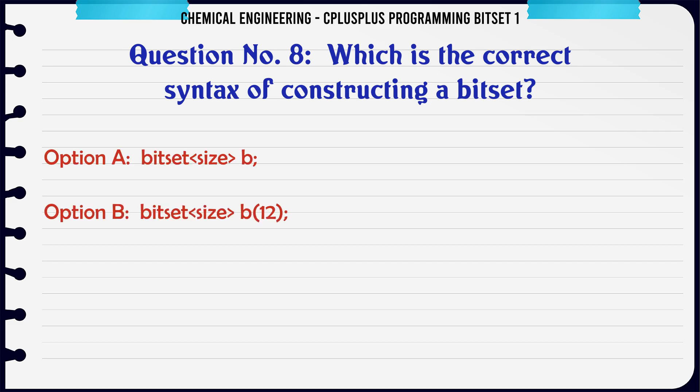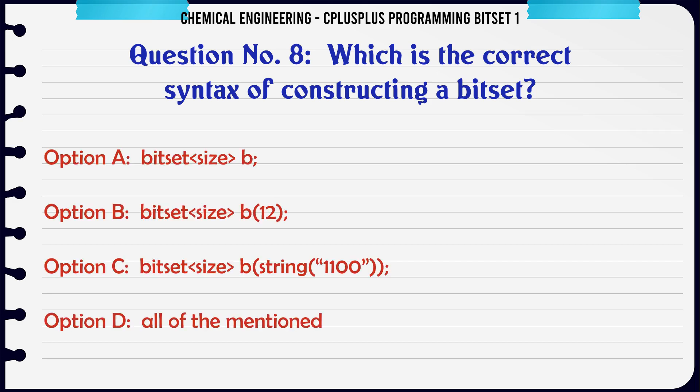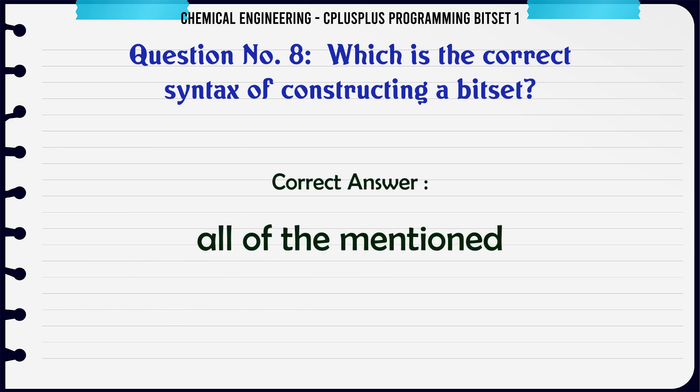Which is the correct syntax for constructing a bitset? A. bitset<size> B. B. bitset<size> B(12). C. bitset<size> B(string("1100")). D. All of the mentioned. The correct answer is all of the mentioned.